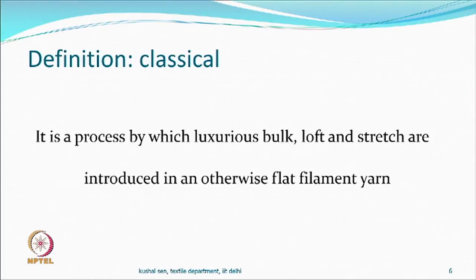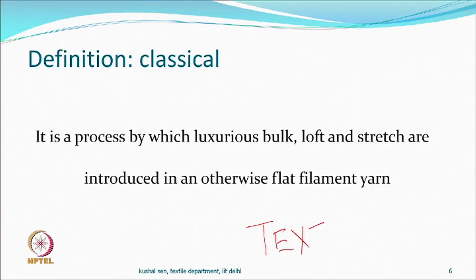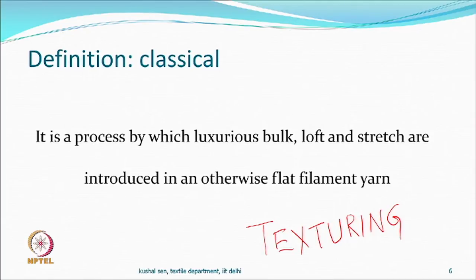Looking at a classical definition — when the first synthetic fibre was made — texturing is defined as a process by which luxurious bulk, loft, and stretch are introduced in an otherwise flat filament yarn. Manmade fibres are generally circular in cross-section and flat in surface characteristics, which is different from natural fibres.